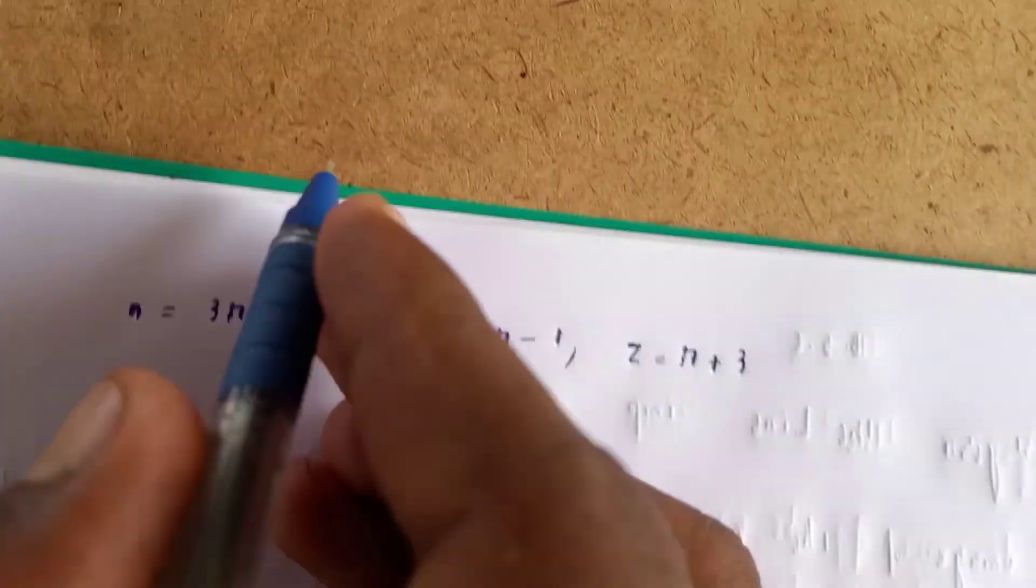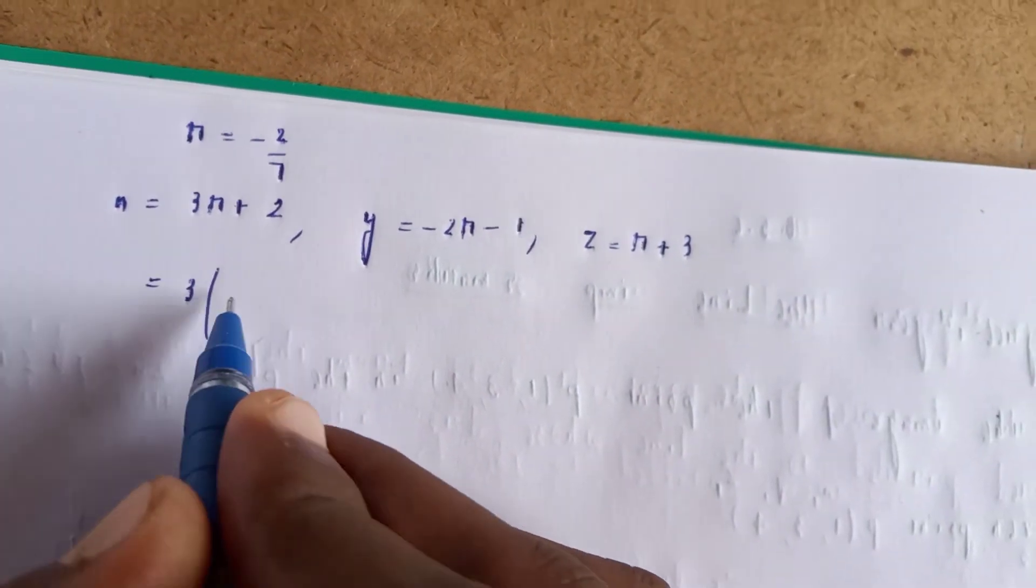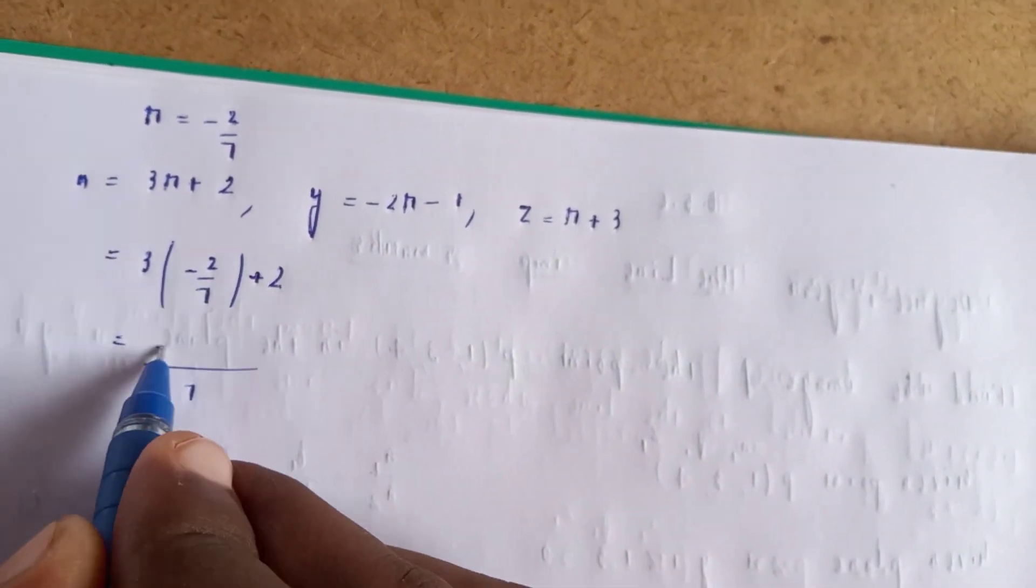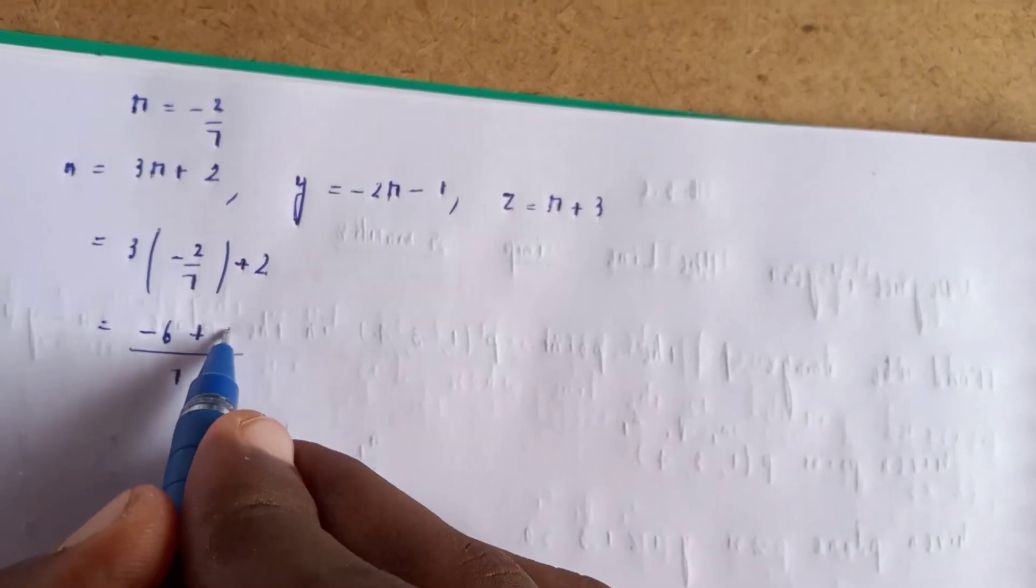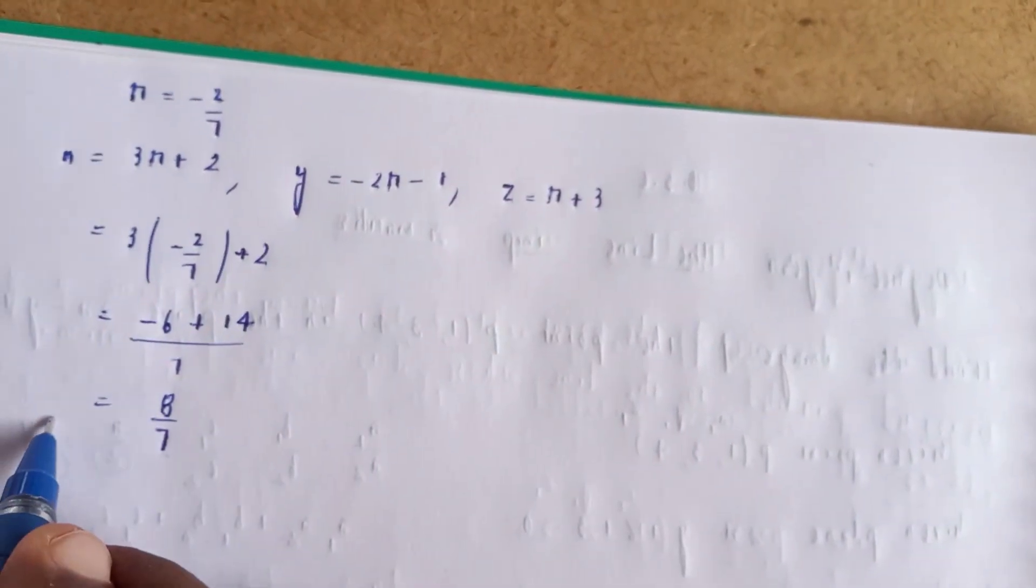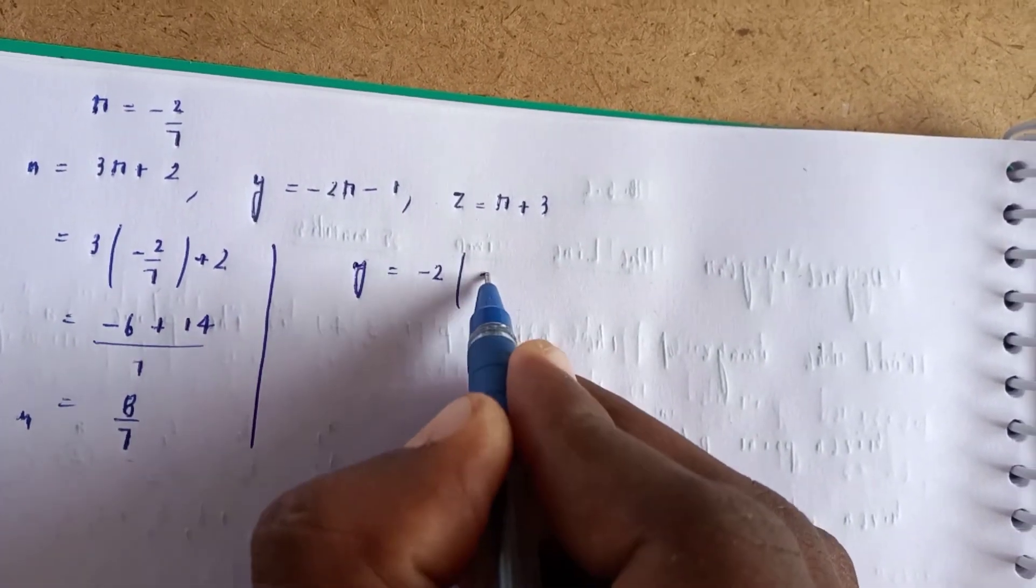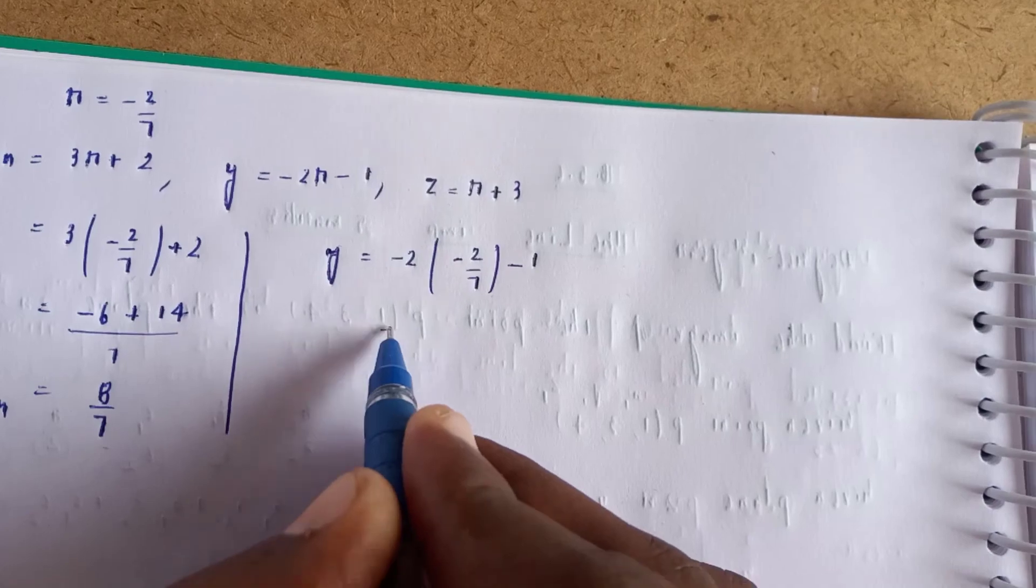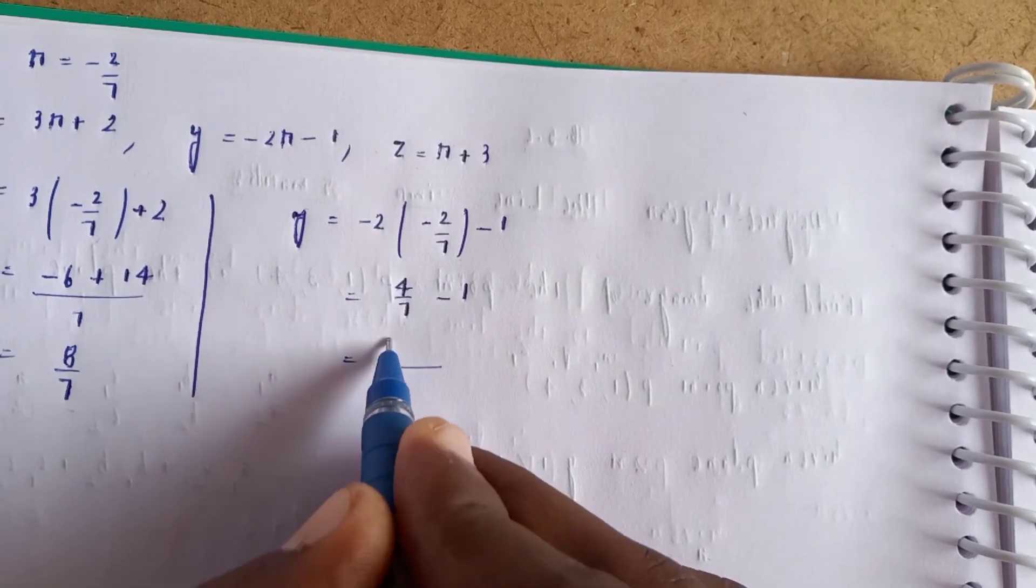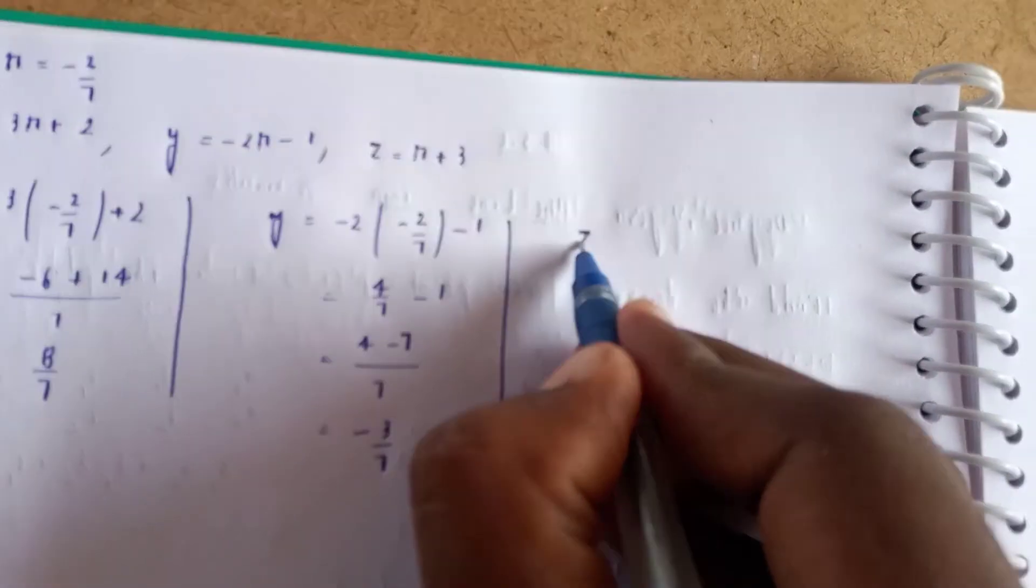Calculating x: x = -6/7 + 2 = (-6 + 14)/7 = 8/7. For y: y = -2(-2/7) - 1 = 4/7 - 1 = (4 - 7)/7 = -3/7.